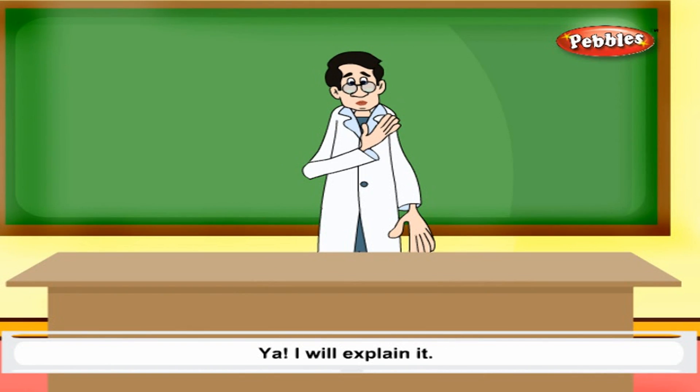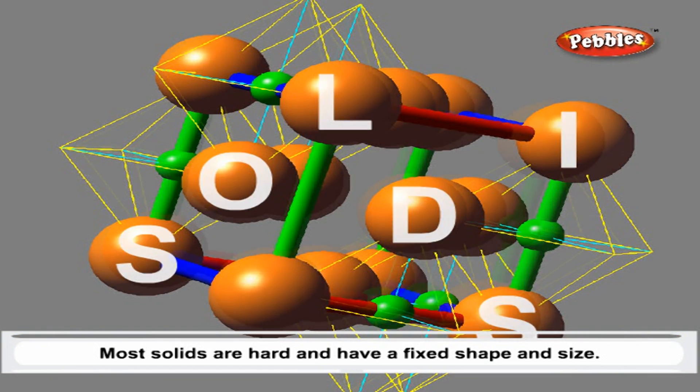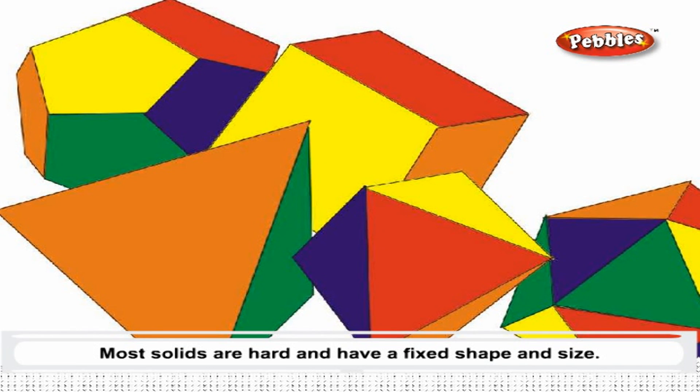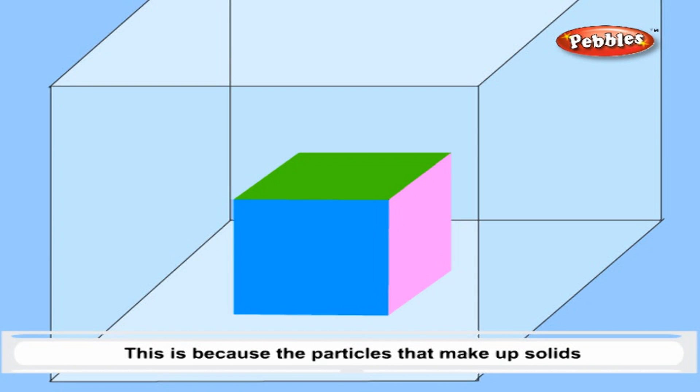Solids. Most solids are hard and have a fixed shape and size. This is because the particles that make up solids are packed together so tightly that they can barely move.